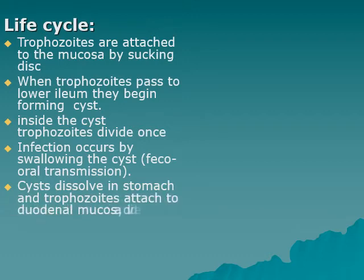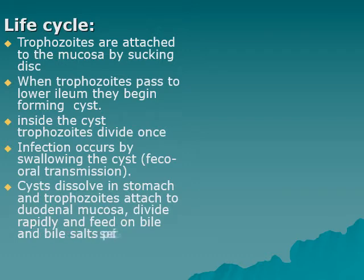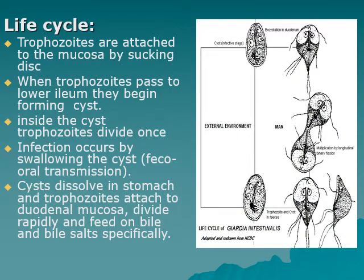The cysts dissolve in the stomach and the trophozoites emerge, attaching to the duodenal mucosa, dividing and colonizing rapidly. They feed specifically on bile and bile salts, so they are present in the upper small intestine, gallbladder, and bile ducts. The life cycle diagram shows cysts giving rise to trophozoites, which divide by binary fission and form cysts again.